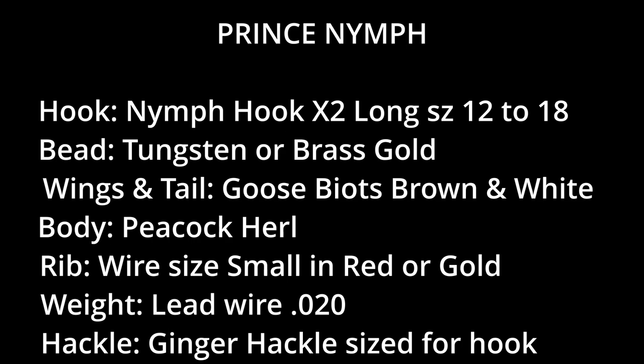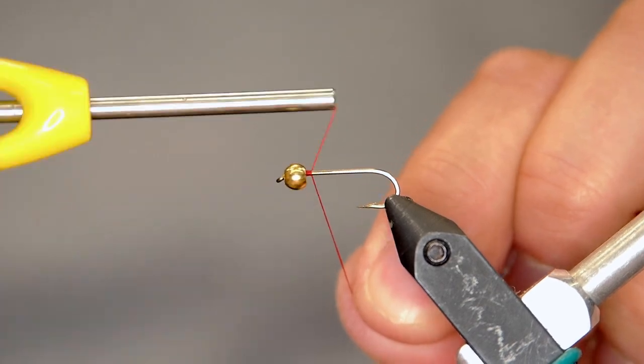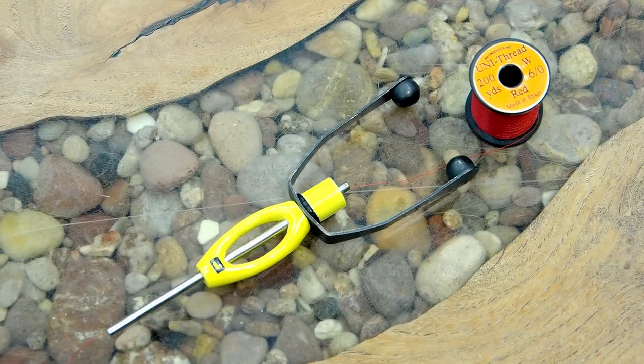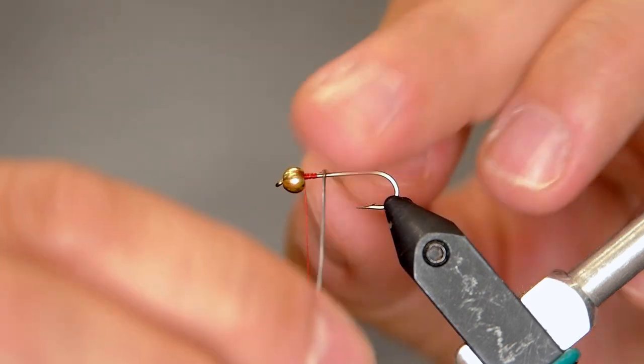Now, this is a very effective pattern, a very classic pattern. We're going to start with a nymph hook times two in length so you've got space for that bead. I've just got a gold bead on here. I'm going to tie on red thread and actually I find it very important to use red thread when tying Prince Nymphs.